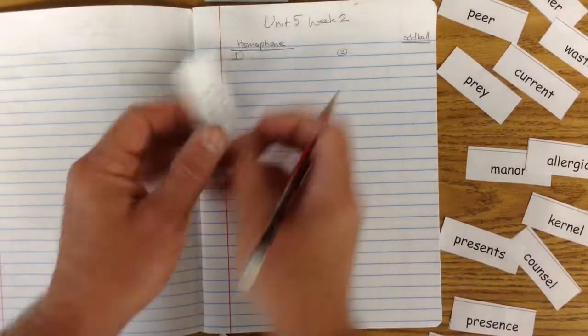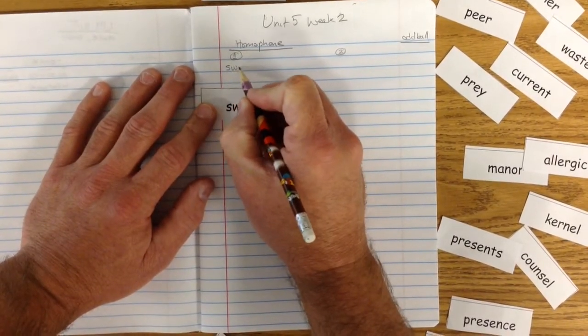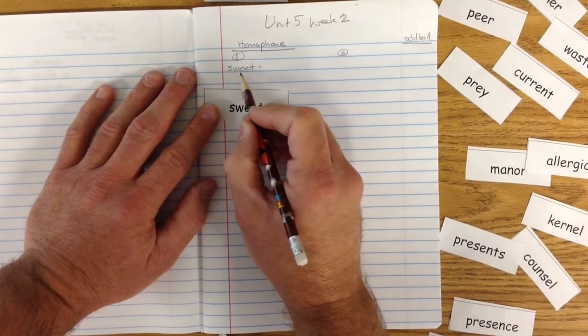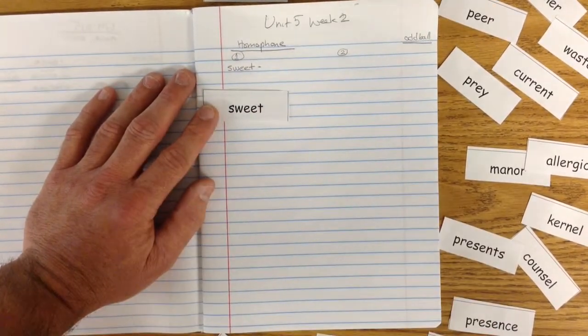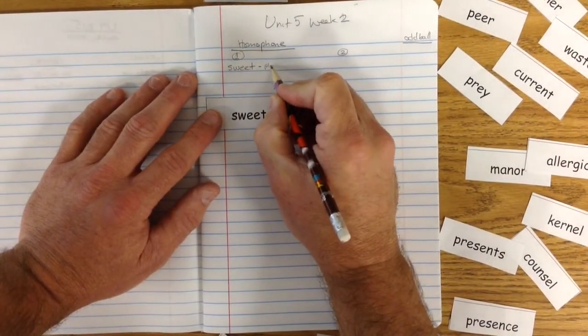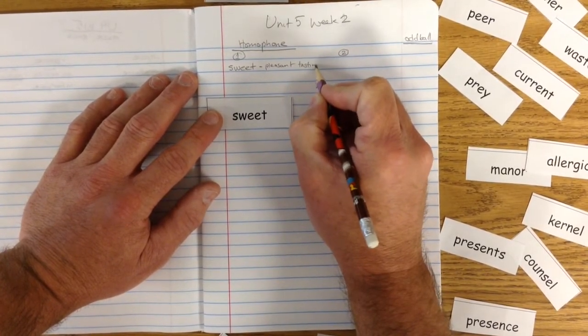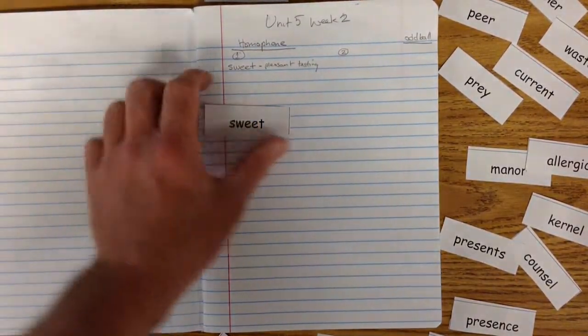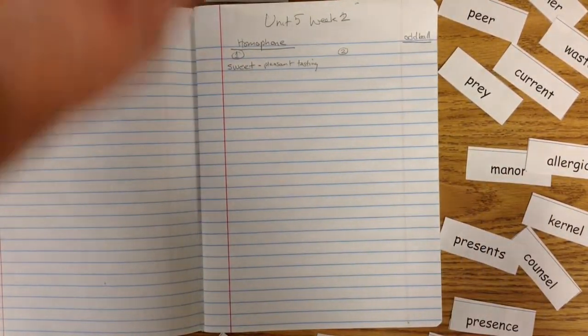So let's start out with our first word. The first word we're going to do is sweet. Sweet. Isn't that beautiful? Now, what does sweet mean? S-W-E-E-T. Sweet. Say it. Spell it. Sweet. That means, let's see, what does sweet mean? I would say it is pleasant tasting. Yeah. Pleasant tasting. That is so wonderful. I love things that are sweet. You love things that are sweet. That goes right into my bag. See how that works? I love that bag.